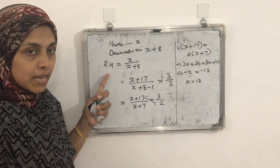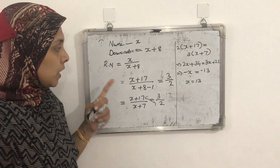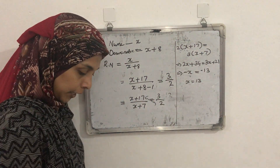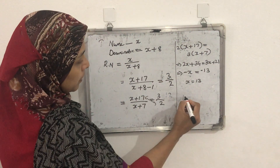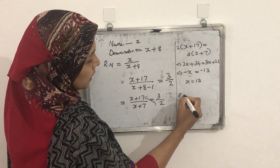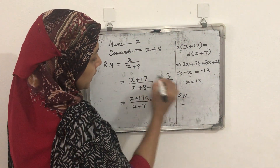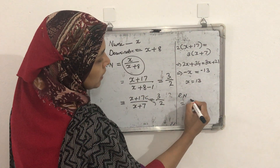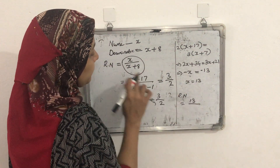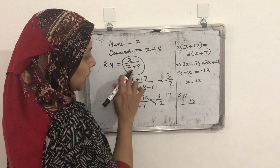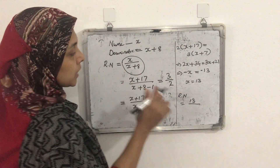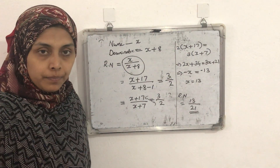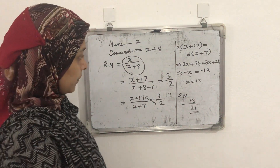So what will be the rational number we want to find out? The value of x is 13. Therefore the rational number is x / (x + 8). Substituting the value of x: 13 / (13 + 8) = 13/21. So the rational number is 13/21.